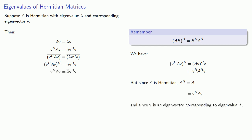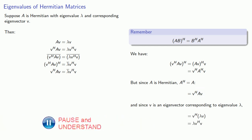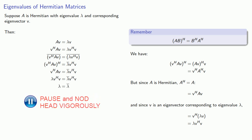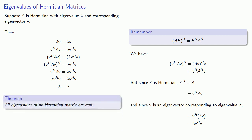Since V is an eigenvector corresponding to eigenvalue lambda, AV equals lambda V, so we can float the scalar to the front. Now we have lambda times V Hermitian V equal to the conjugate of lambda times V Hermitian V. This means lambda must equal lambda conjugate, which can only happen if lambda is a real number. Therefore, all eigenvalues of a Hermitian matrix are real.